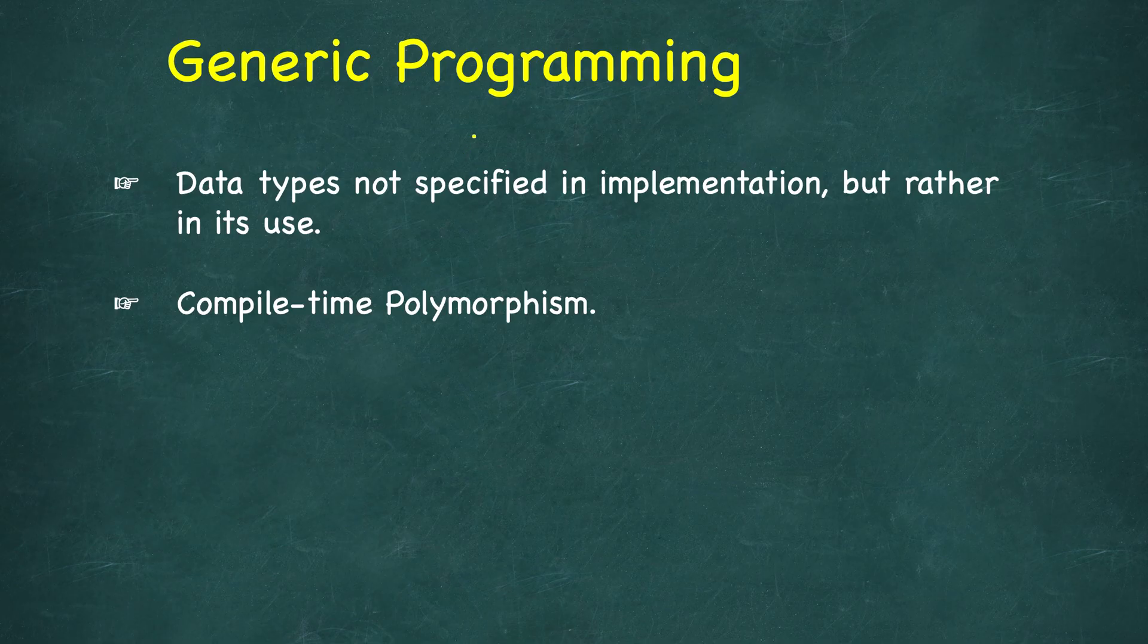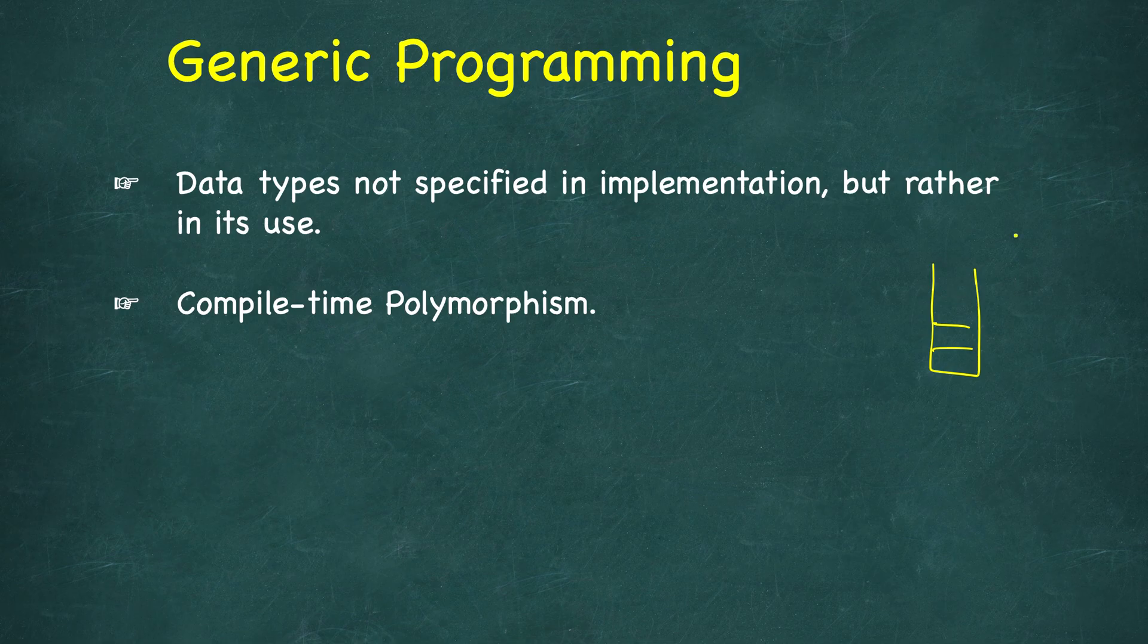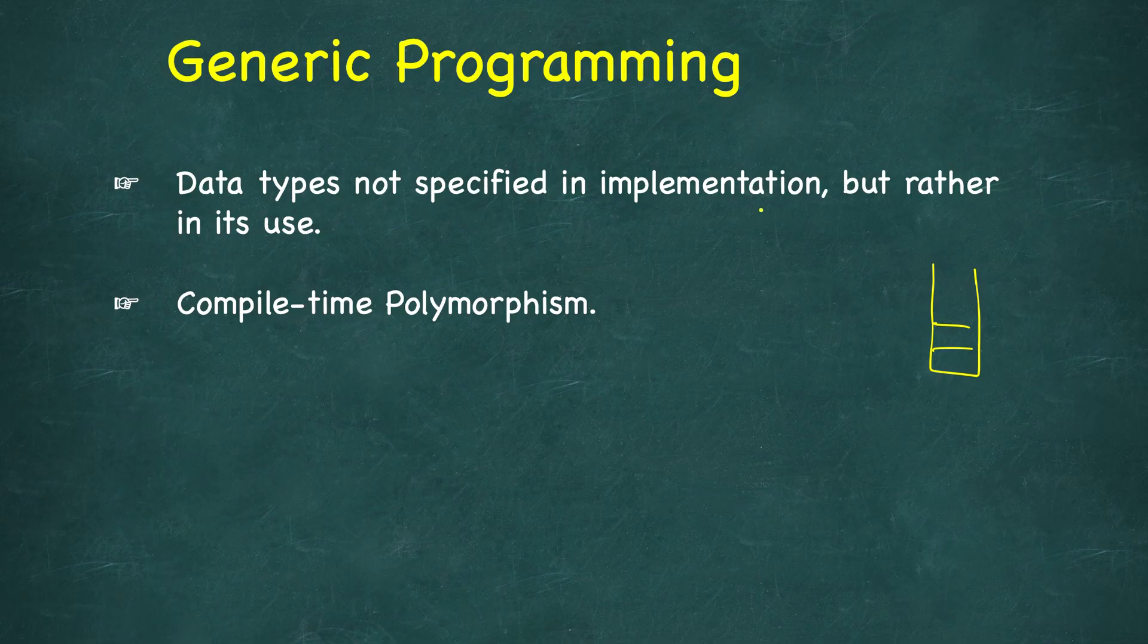Now let's see generic programming which we have just looked into. Generic programming is a programming paradigm where data types are not specified in the implementation of the code, but rather they are specified while using those implementations. The same example as we saw for stack—we don't need to know the type of data being inserted in the stack for implementing the stack.